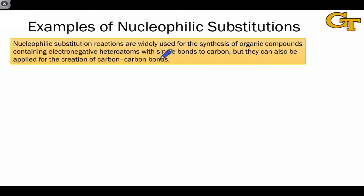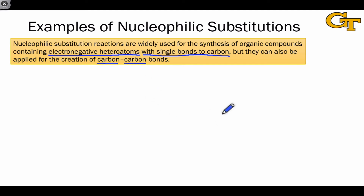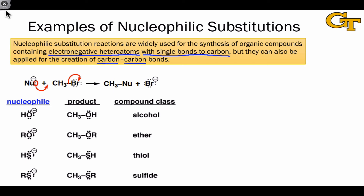Nucleophilic substitutions are an excellent way to establish bonds between a heteroatom, which acts as the nucleophile, and a carbon, which acts as the electrophile. The products of these reactions often contain an electronegative heteroatom bearing a single bond to a carbon atom. However, we can also use reactants that contain nucleophilic carbon and electrophilic carbon to establish carbon-carbon bonds. Here are a few examples of nucleophilic substitutions where the leaving group is Br⁻ and we're varying the nucleophile. Notice in all of these examples that the nucleophile is some electron-rich species that wants to give electrons away, and in the product the new bond involves a pair of electrons originating at the nucleophile.